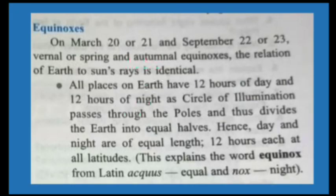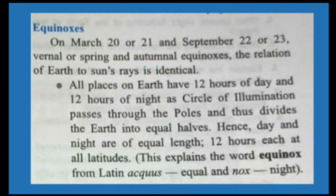On March 20 or 21st, and September 22 or 23rd — the vernal or spring and autumn equinoxes — the relationship of the Earth to sunrise is identical. The same amount of sunrays reach the Earth, directed towards the equator. All places on the Earth have 12 hours of day and 12 hours of night, as the circle of illumination passes from pole to pole, dividing the Earth into two equal halves — one in darkness and one in light. Equinox means equal night, and both hemispheres have equal amounts of day and night.